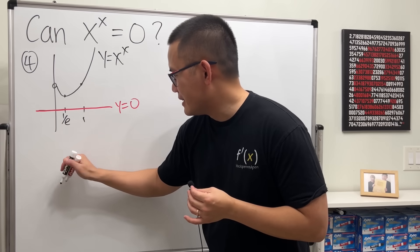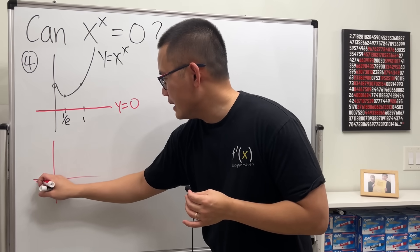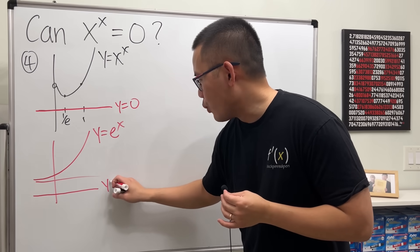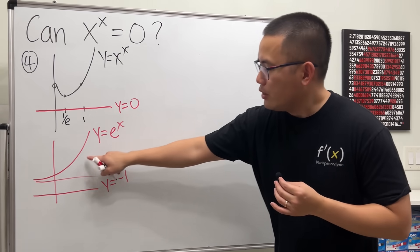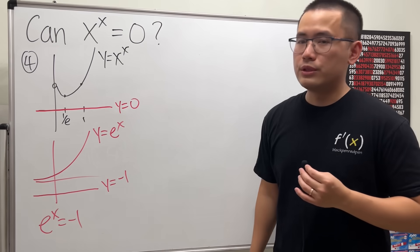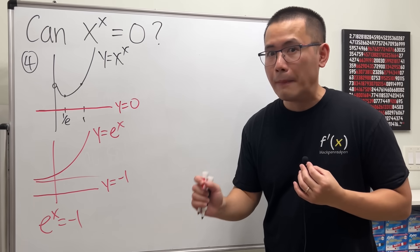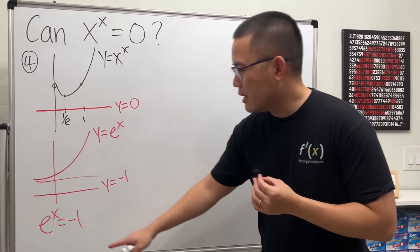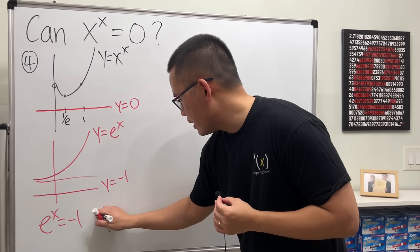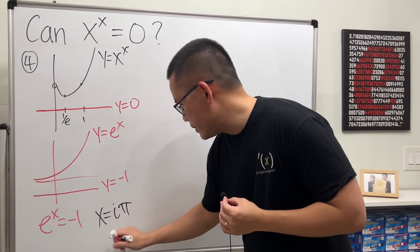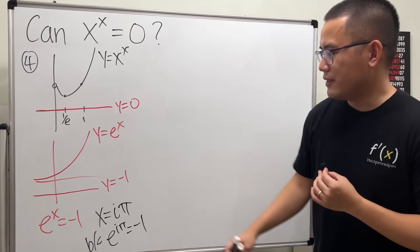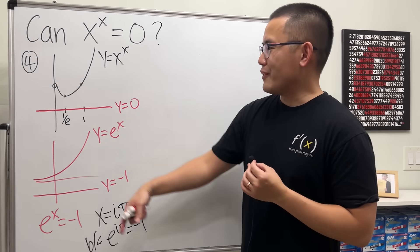Maybe not, because here's an example: if we graph y equals e to the x and y equals negative one, they don't intercept either. Can we conclude that e to the x equals negative one has no solution? Yes in the real world, but no in the complex world — because this does have a solution when x equals i times pi, by Euler's identity: e to the i pi equals negative one. So you cannot use the graph alone to rule out solutions.